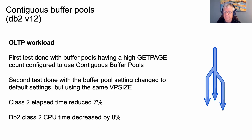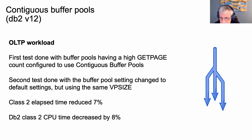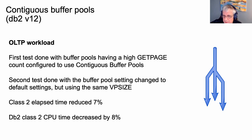In DB2 version 12, contiguous buffer pools were introduced. Previously they had buffer pools but they weren't contiguous — they weren't allowing a large continuous block of memory. As an example of the impact of allowing that larger block of memory on an online workload: one test with and one without showed a reduction in elapsed time of seven percent, and CPU time decreased by eight percent. That was largely because the buffer pools no longer needed to manage the transitions between different memory segments.